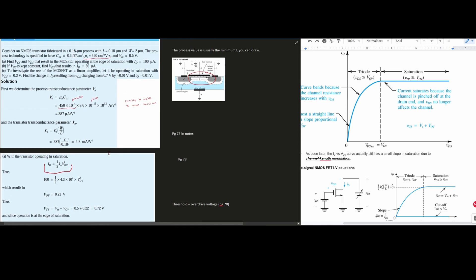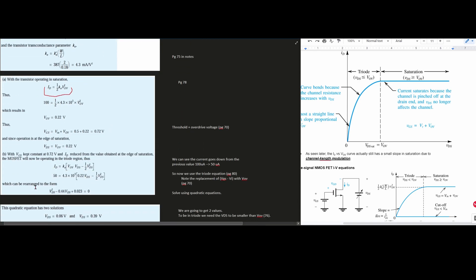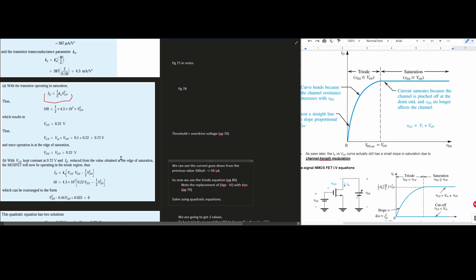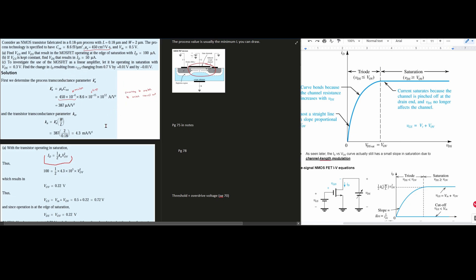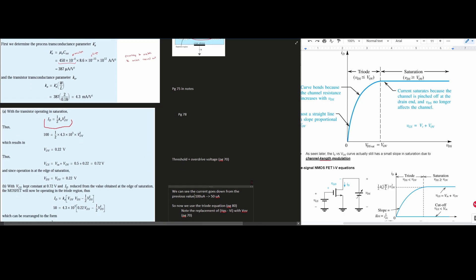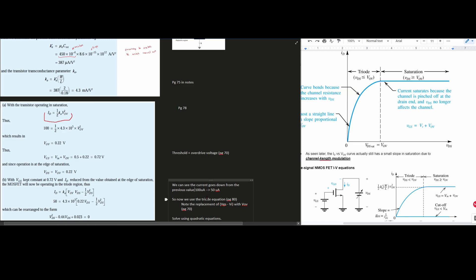Now let's move on to part B. Part B says, if VGS is kept constant, find VDS that results in ID equal to 50 microamps. So we come down here. With our VGS kept constant at 0.72 volts, and ID reduced from the value obtained at the edge of saturation, the MOSFET will now be operating in the triode region. And what that is saying is that we can see that the current goes down from the previous value. The previous value in A was 100 microamps, and now we're going to go to 50 microamps for part B. So we go from 100 to 50. And since it's going down, that means we are going to be in the triode region. If it was going up, we'd be saturation.